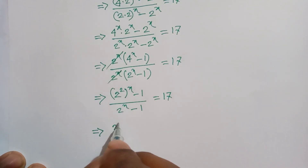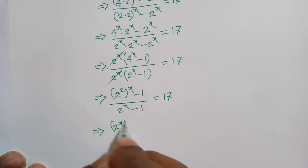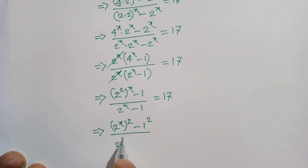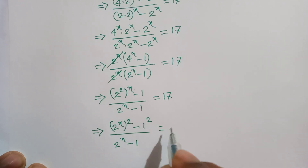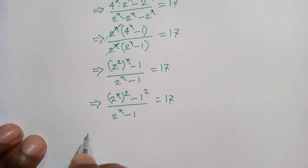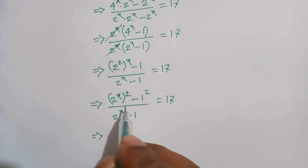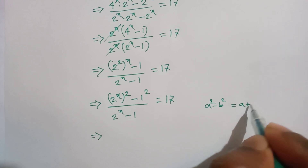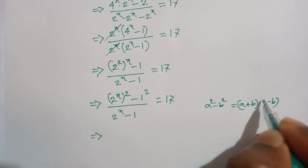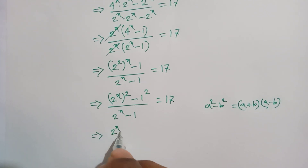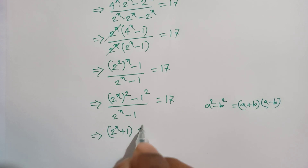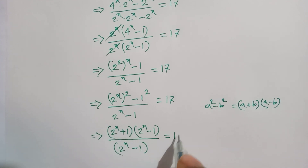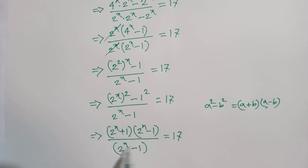This can be written as (2 to the power x) squared minus 1 squared, divided by 2 to the power x minus 1, equals 17. Now applying the difference of squares formula — a squared minus b squared equals (a plus b)(a minus b) — the numerator becomes (2 to the power x plus 1)(2 to the power x minus 1), divided by (2 to the power x minus 1), equals 17. We cancel the (2 to the power x minus 1) terms.